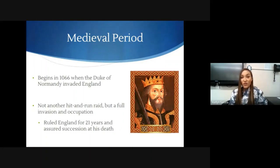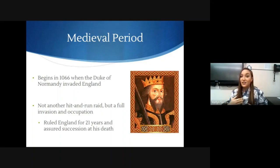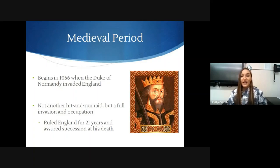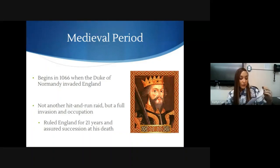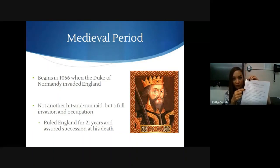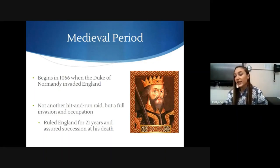William came in, attacked them, stuck around, and declared himself the King of England. He ruled on the throne for 21 years until his death. This was not just another hit-and-run — he stayed and declared himself King. When he died, he avoided the mistake that many other English kings made by having an heir to the throne. He had a son, and so even after his death, his son took over and his line of succession continued from that point on.